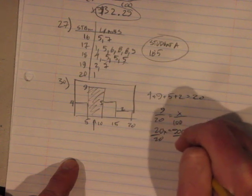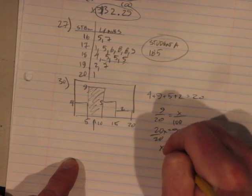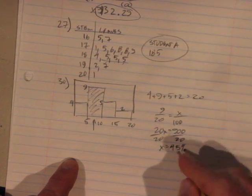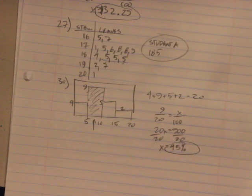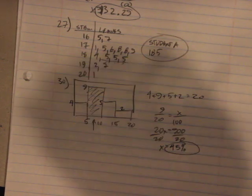Divide both sides by 20 and x equals 45 percent. 45 percent chance. So close to getting that whole thing on one video.